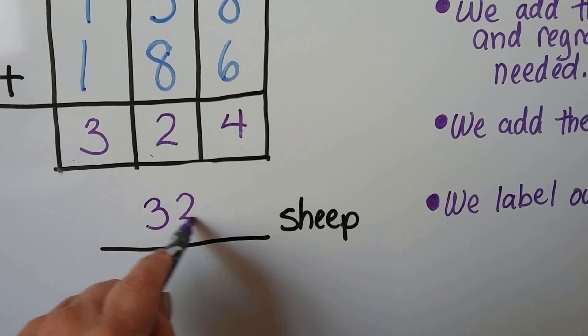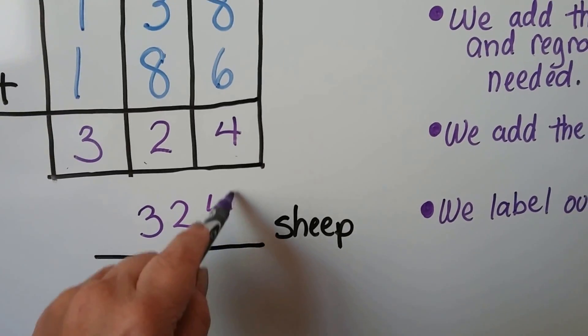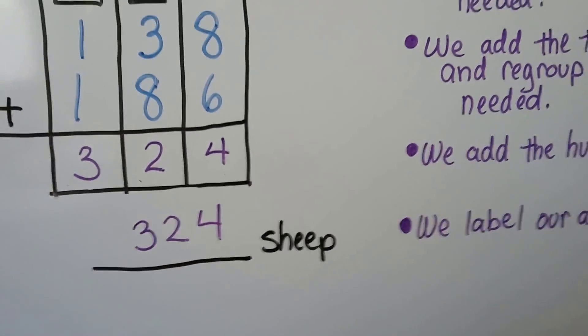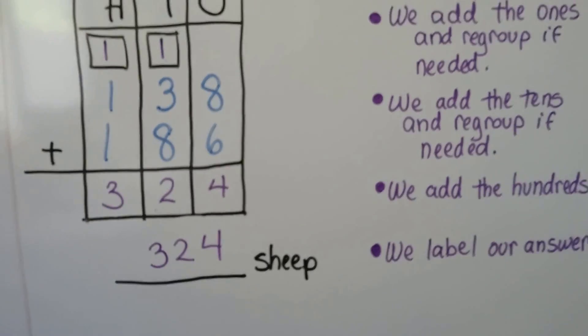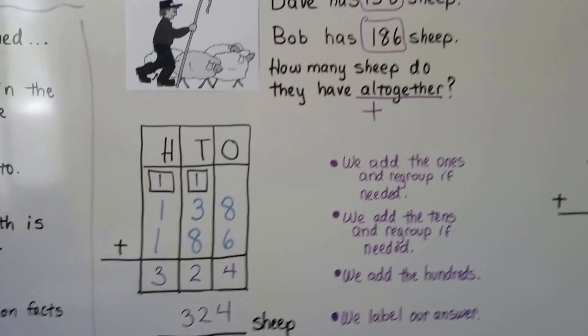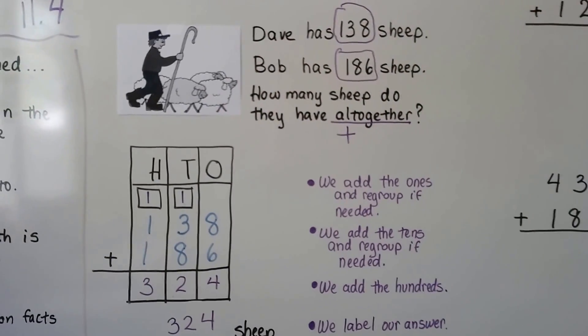324 what? 324 sheep. That's what they have all together.